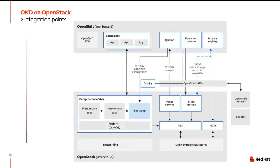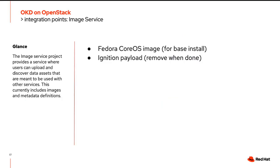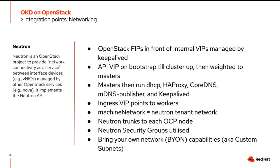The integration points for OpenStack when putting OKD on it: first is the image service — Glance — where we store the CoreOS image for the base install and the ignition payload. We can't add ignition directly to cloud-init because it's too big, so we give the instance a URL to retrieve it. This means the CoreOS image and tenant will need access to Glance. For networking, we put OpenStack floating IPs in front of internal VIPs managed by keepalived.